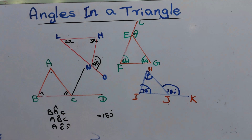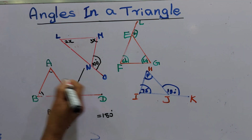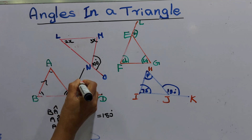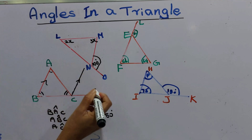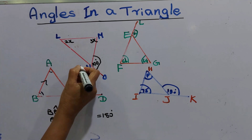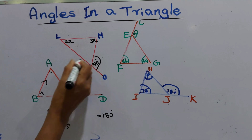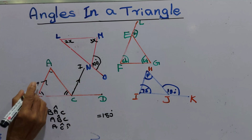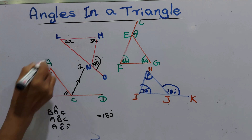This is the parallel line to BA. We will name this line as CI. CI line is parallel to BA.